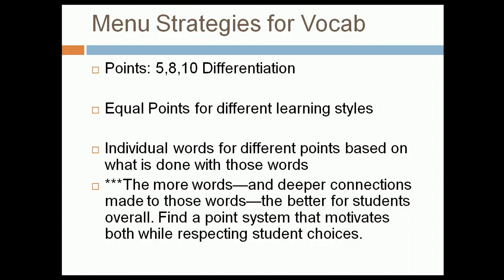There are several strategies for offering points for different vocabulary activities. You can do a point differentiation where lower-level thinking activities are worth five points each, medium-level activities eight points, and higher-level activities ten points. Students can do two of the five-point activities, one eight-point, and one ten-point. You can also offer equal points for different learning styles — I make sure I do that, as I don't want to value one learning style over another. Lower-level thinking skills should have fewer points, and higher-level thinking skills should have more.